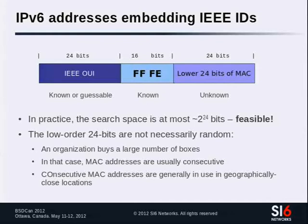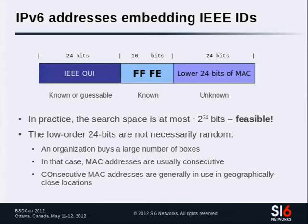Another finding we're working on documenting is that even if the same organization doesn't own all consecutive MAC addresses, consecutive MACs are usually geographically close because a provider bought a batch of boxes and sold them to companies in geographically nearby locations. So information about vendor MAC ranges in a region can be useful for performing IPv6 scans on a target network.